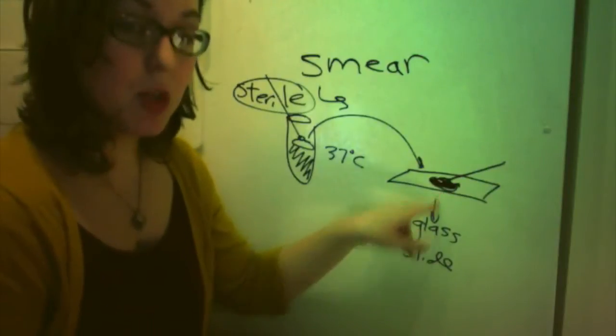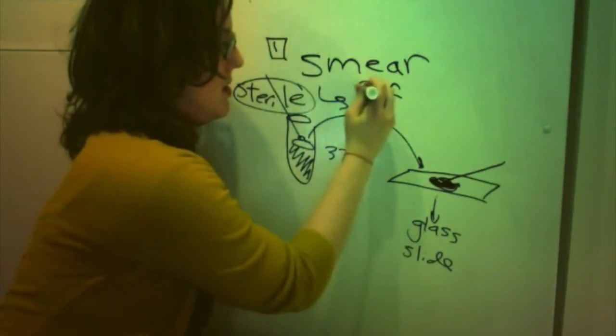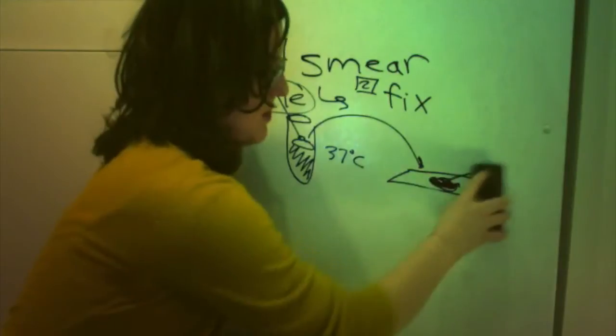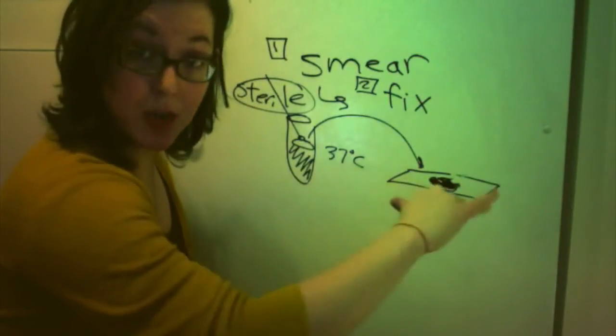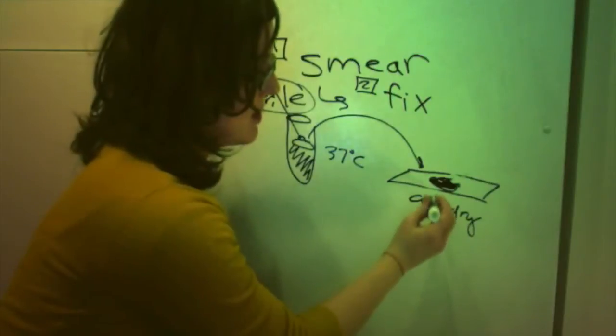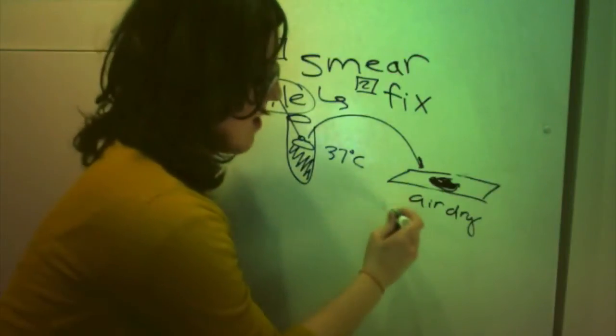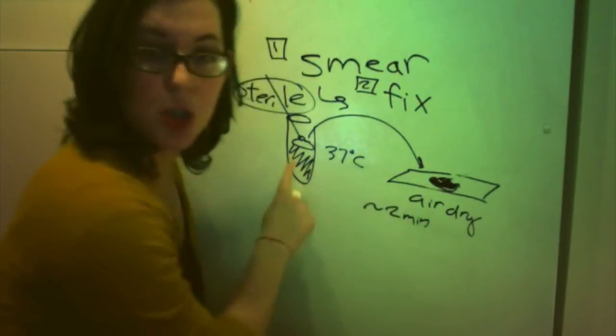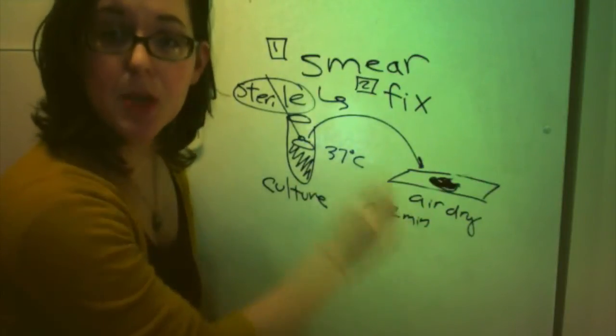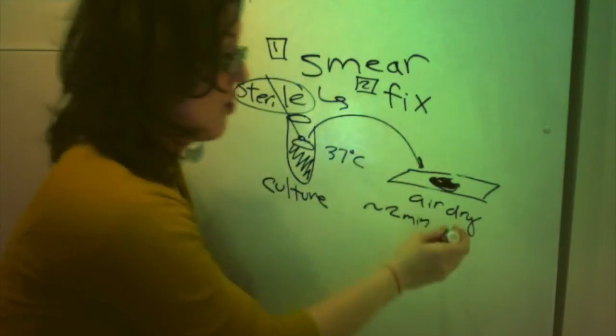Once you have made the smear, you need to fix it. So, this is step two. You need to fix the slide. Meaning, once you've made your smear, you let it air dry. And, so, this should not take more than two minutes. If it takes more than two minutes, then you have put way too much of the bacterial culture. You've put too much culture onto your slide. So, it should be able to air dry within two minutes. Once it has air dried, then you want to fix it with fire.